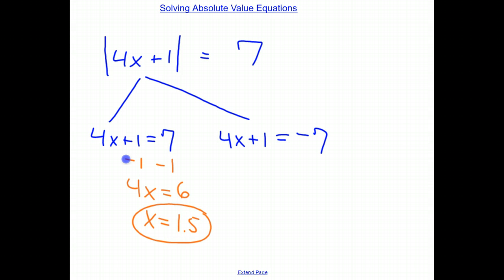So here, if I were to go back into the equation and plug 1.5 in, I would get 4 times 1.5, which is 6, plus 1, is 7. So the absolute value of 7 equals 7.